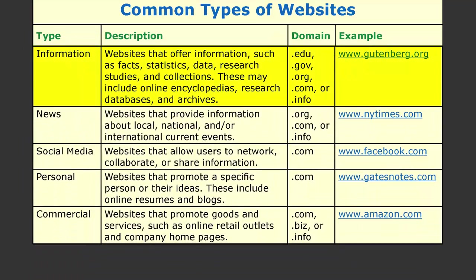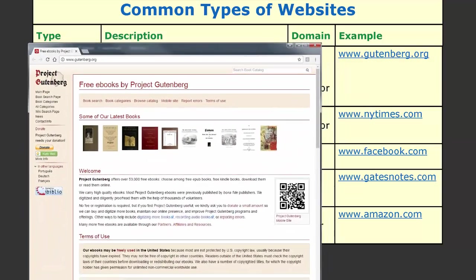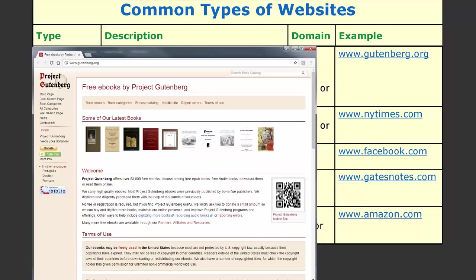Some websites are informational. These websites provide information such as facts, statistics, data, research studies, and collections. They may include online encyclopedias, research databases, and archives. Typical domains can include .edu, .gov, .org, .com, and .info. An example is www.gutenberg.org, which is a free online archive of e-books.